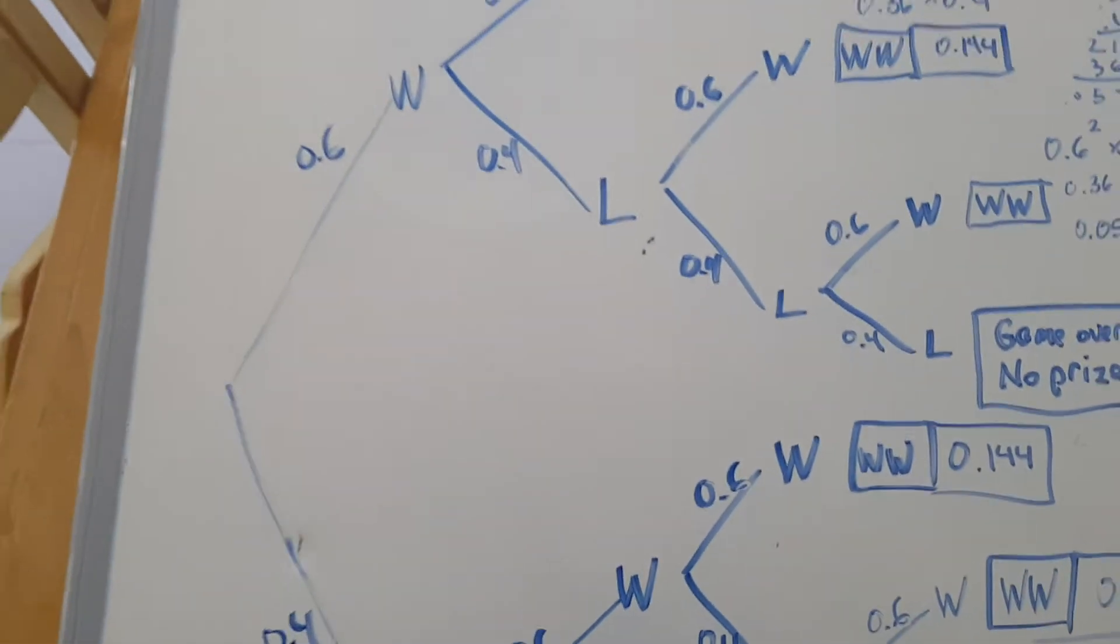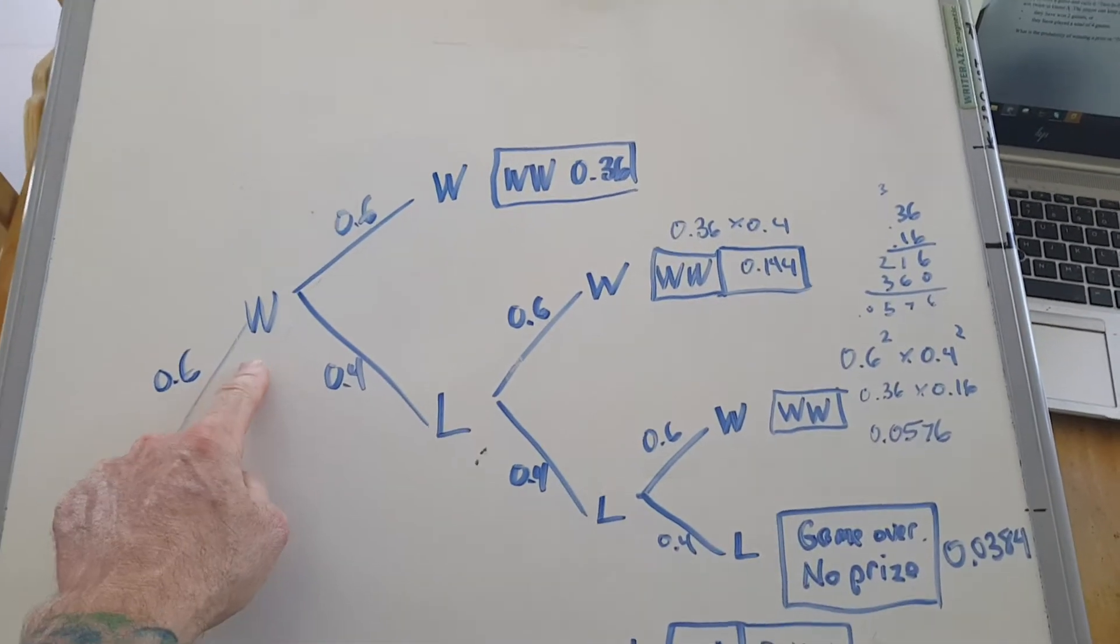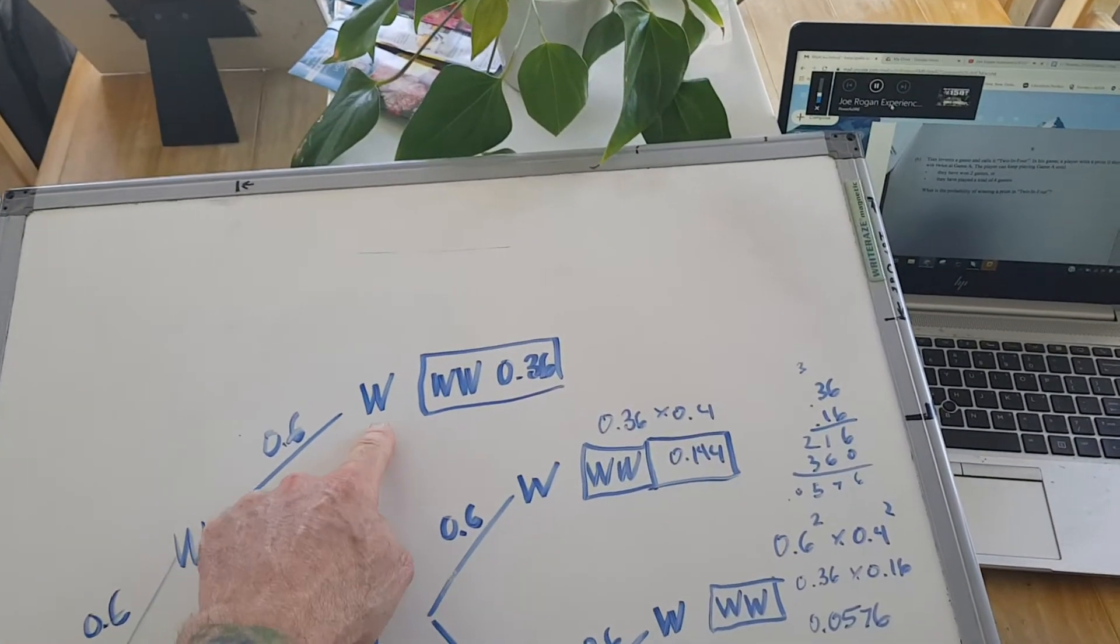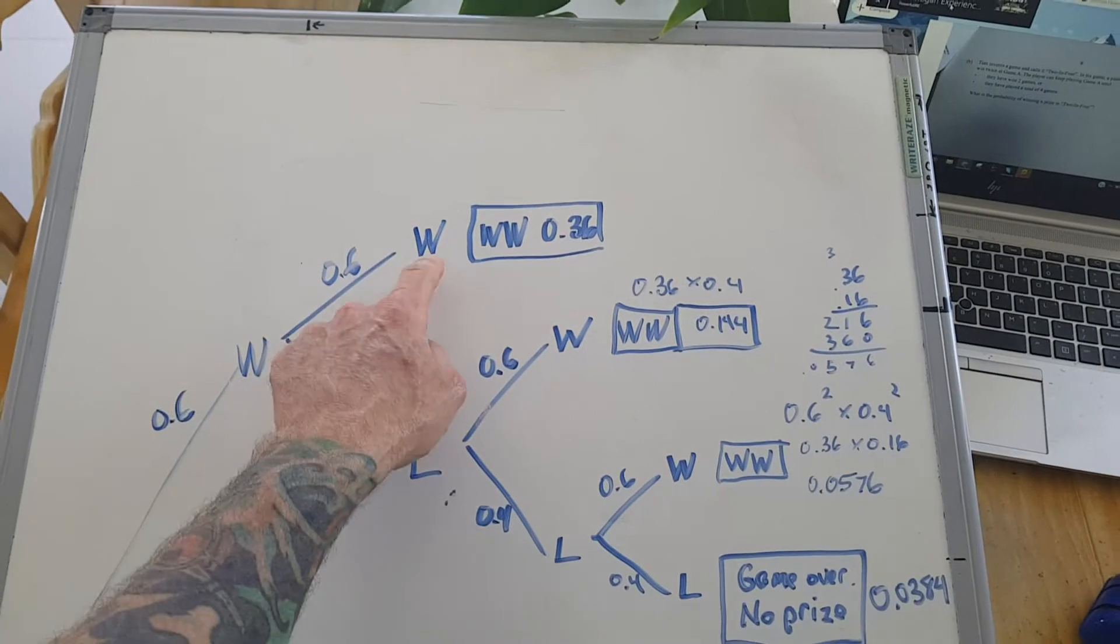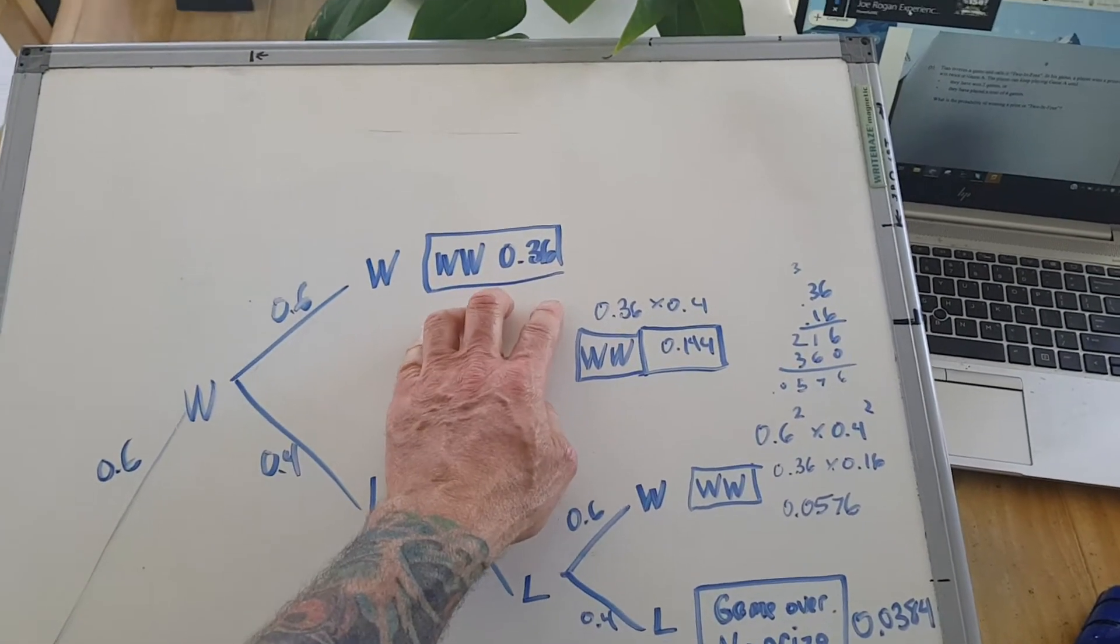So basically the way the game breaks down is you'd play your first round, you've got one win, you'd play your second round. Well, you've got two wins, the game's over, there's the probability.